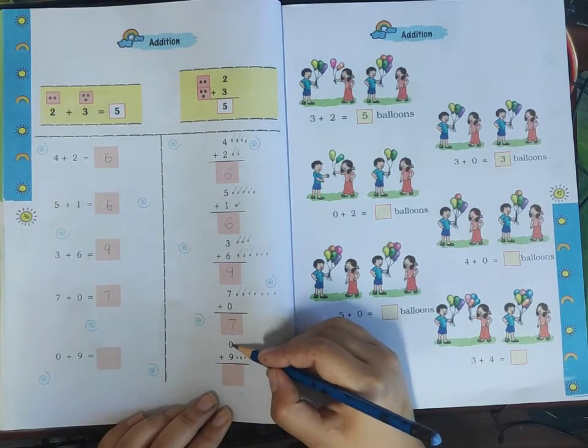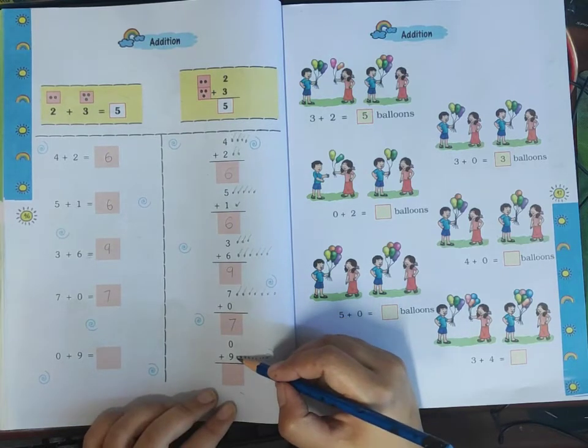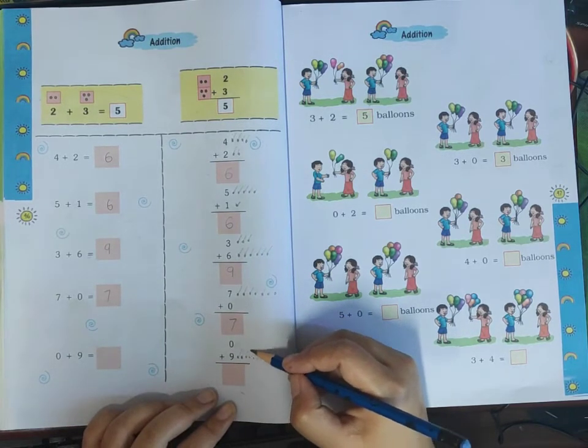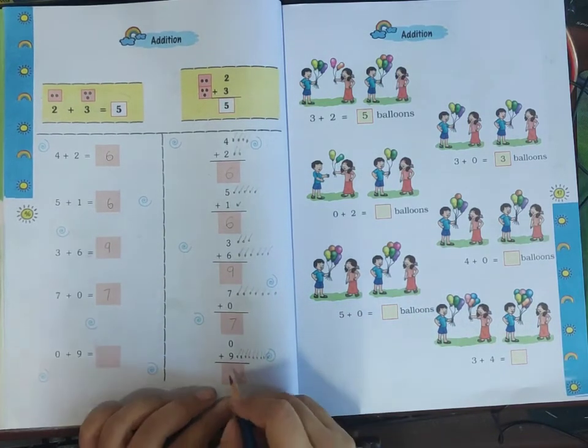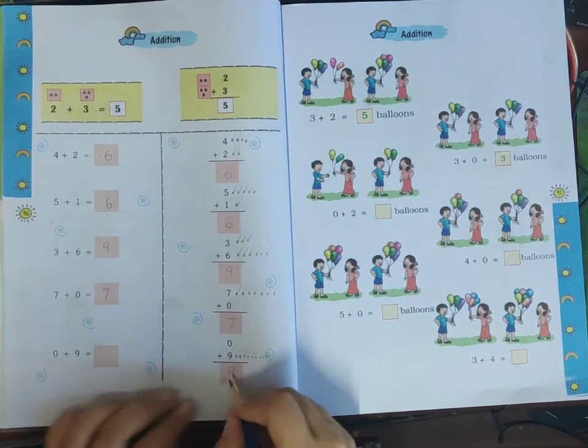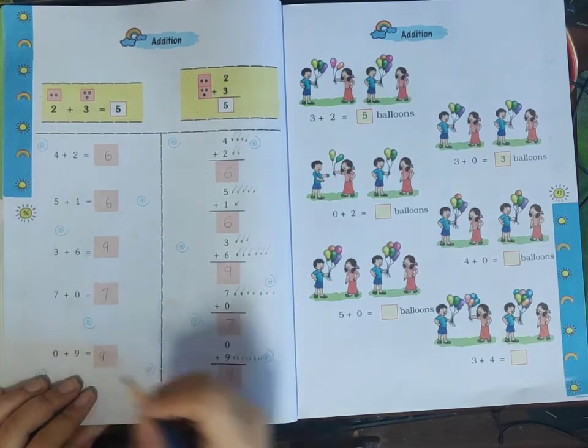Nine is the answer. Let me count one more time: one, two, three, four, five, six, seven, eight, nine. Nine plus zero is nine. The answer is nine.